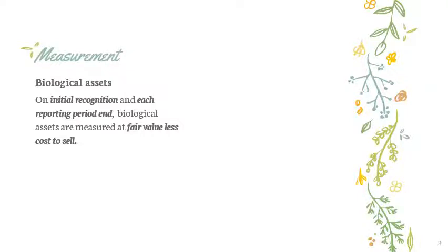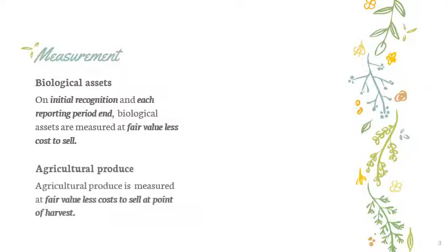Meanwhile, agricultural produce are measured at fair value less cost to sell at the point of harvest. Afterwards, they are accounted for under IAS 2 Inventories and measured at the lower of cost and net realizable value, or LCNRV.